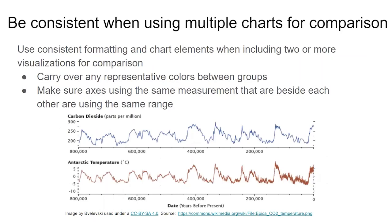When using multiple charts for comparison, it is important that adjacent axes use the same range and distribution of tick marks. It's also important to keep formatting and other chart elements consistent, such as color — so if the same groups are being shown in multiple charts, use the respective color for each group across all the charts.